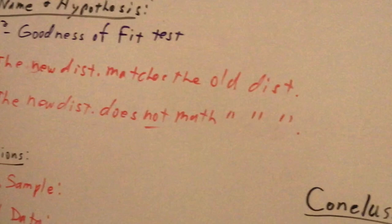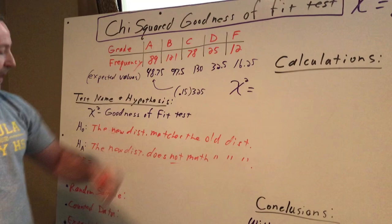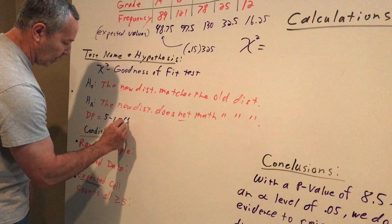And the degree of freedom we have again, the number of categories. I have one, two, three, four, five. So it's going to be five minus one, which will equal four, and remember that you should show that calculation on your paper.